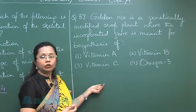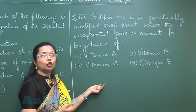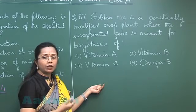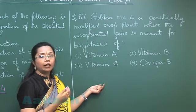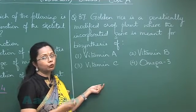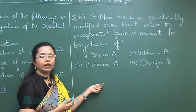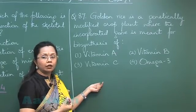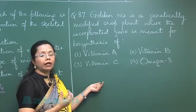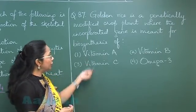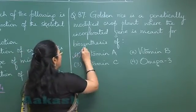the enzymes required for the synthesis of vitamin A, were extracted from daffodils and incorporated into rice. That is why it is light yellow in color and given the name golden rice. So the answer is vitamin A.